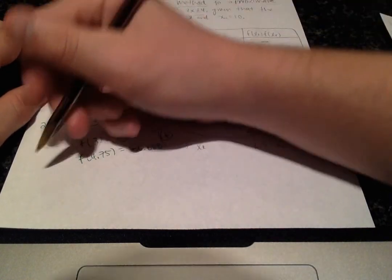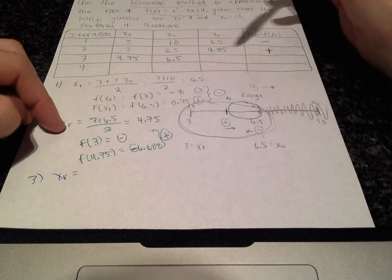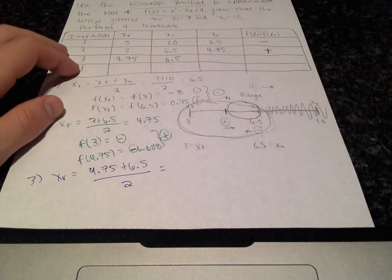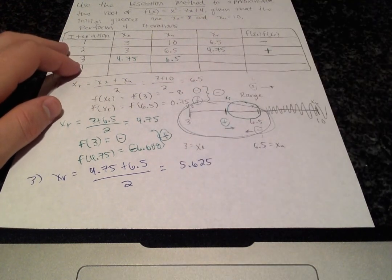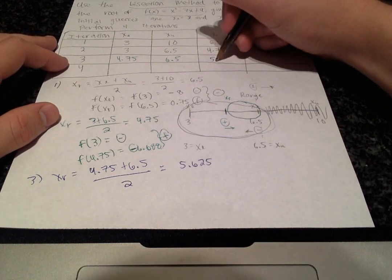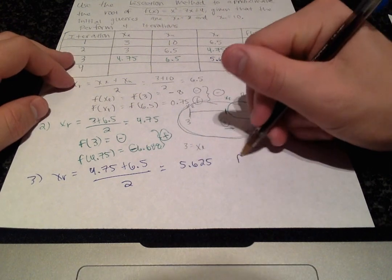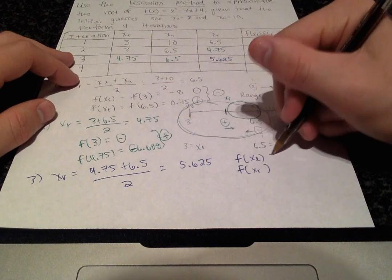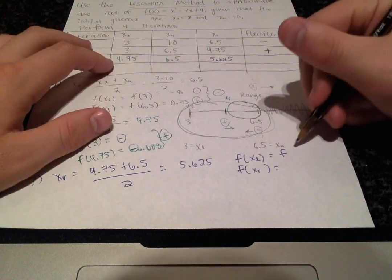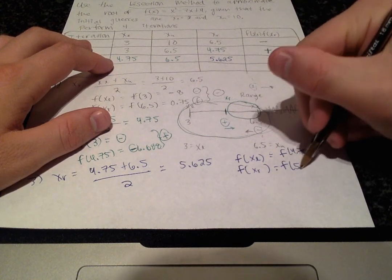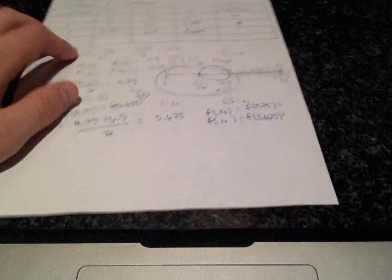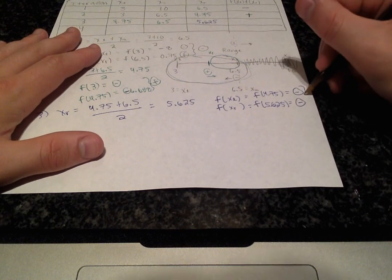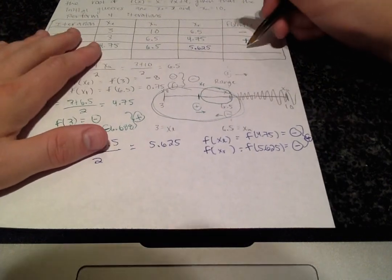And now we'll perform the third iteration. Our approximation xr is going to be the same as the last two iterations. Fill that into the table. And once again, f of your lower limit and f of your xr. So here that is 4.75 and 5.625, which we get as negative and negative. The product of these two is a positive, so we're going to fill that into our chart.